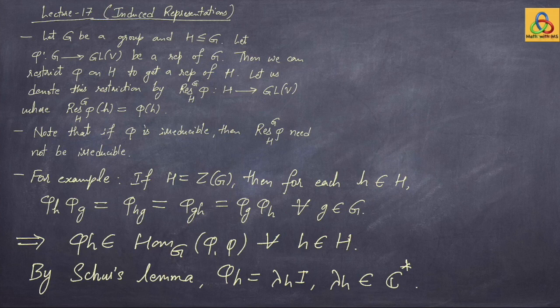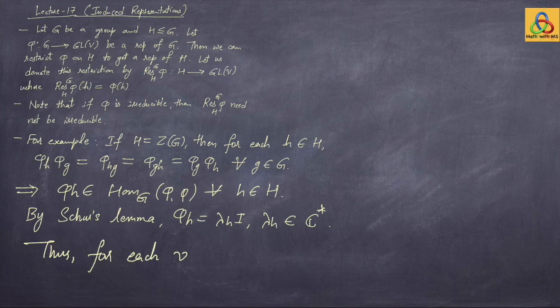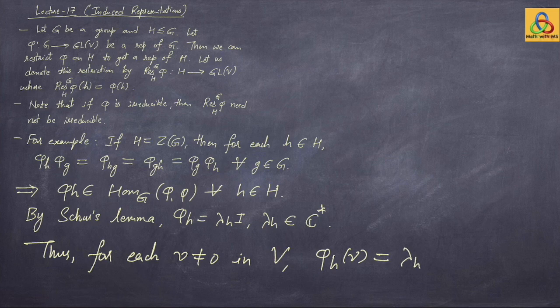If you take any non-zero vector v in your representation space V, phi(h) of that v is lambda(h) times v, so it again falls in the vector space spanned by v. Therefore each one-dimensional subspace of V is kept invariant by this restriction map.